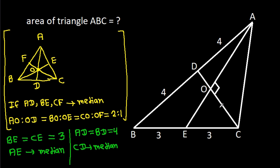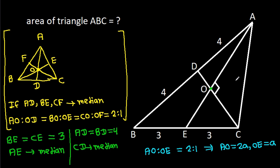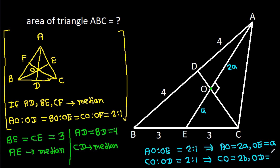AE and CD are intersecting at O. That means AO:OE = 2:1. So if AO is 2a, then OE is a. And also, CO:OD = 2:1. That means CO is 2b, then OD is b.